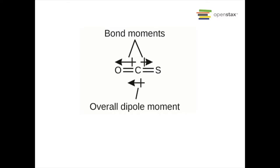Another example: carbonyl sulfide (OCS) has two bond moments — carbon-oxygen and carbon-sulfur — but the carbon-oxygen moment is much stronger than the carbon-sulfur. Even when you add these unequal vectors, you still have an overall net dipole moment, so this is an overall polar molecule.